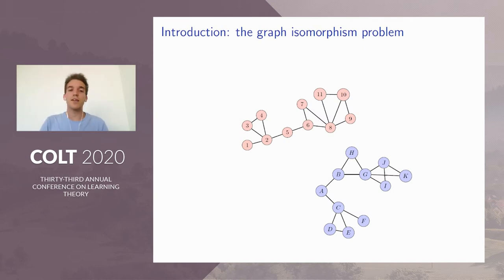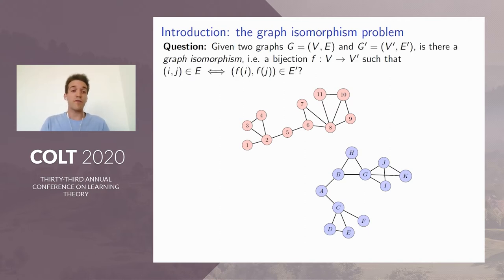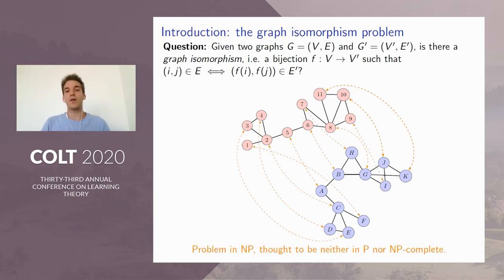We are given two graphs, say G and G prime, and we're asking the following question: Can we find a graph isomorphism between these two graphs, that is a bijection f from the vertices of G to the vertices of G prime such that f preserves edges? You may know that finding such an f when possible is extremely difficult. There is no polynomial time algorithm that succeeds. This problem is believed to be neither in P nor NP-complete, which is an interesting example when looking at the P equals NP conjecture.